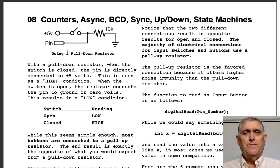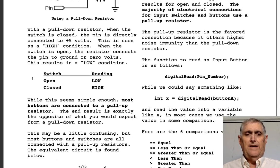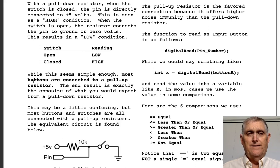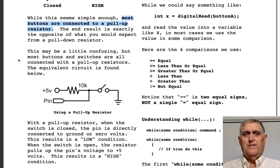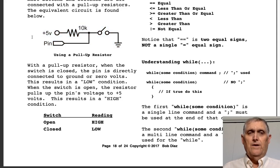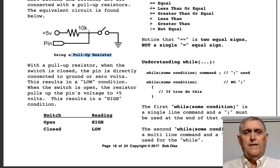The pull-down resistor is very logical: switch open means we see a zero, close the switch and five volts appears — we get a logical one. Every student says 'got it, no problem.' Except that's not how we do it most of the time. Most button switches are connected to a pull-up resistor, which is exactly the opposite of what you were expecting.